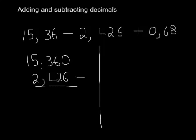And then we just use standard column method subtraction. So let's just quickly do that. 0 minus 6 can't do, so we have to borrow. So it's now 10 minus 6, which is 4. 5 minus 2 is 3. 3 minus 4 can't do, so I have to borrow from the numbers to the left.